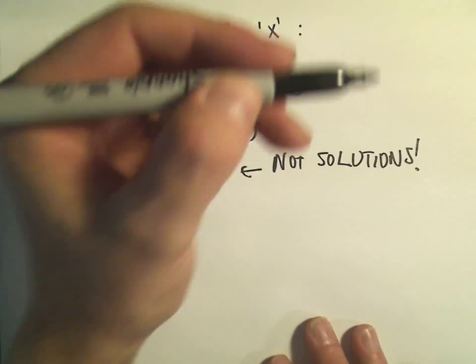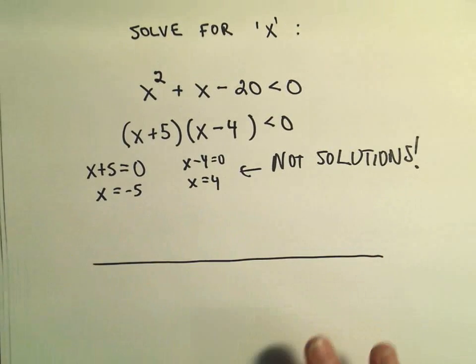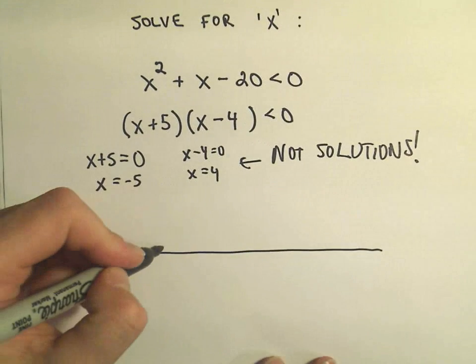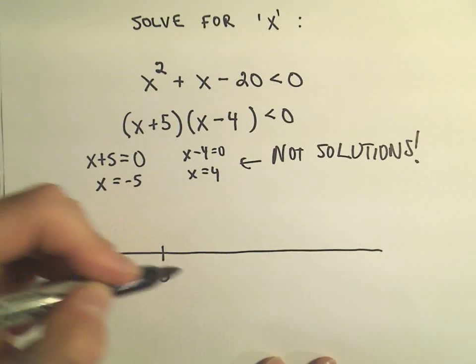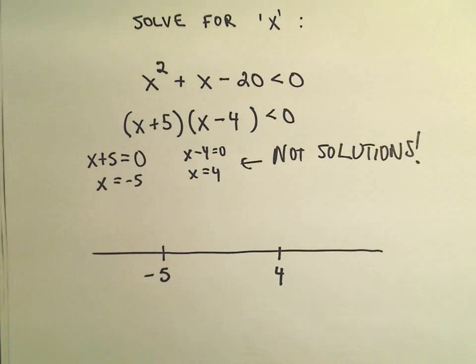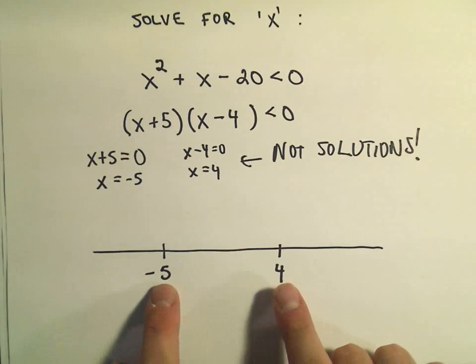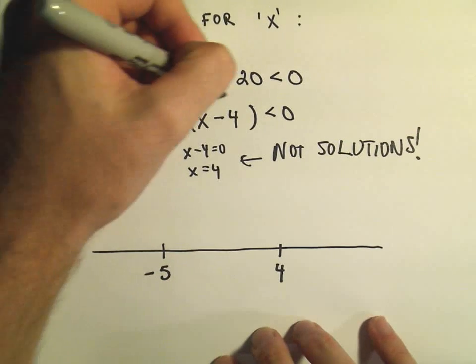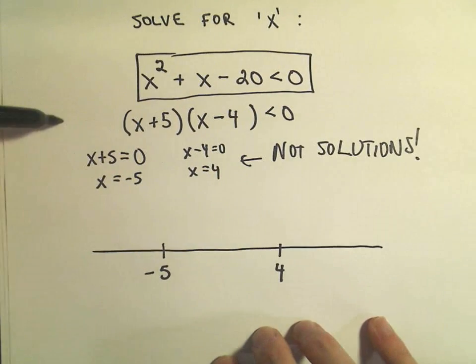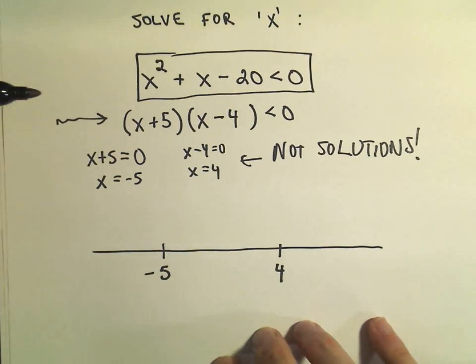What I do with these numbers, though, these are the numbers that I put on a little number line. So I'm going to put negative 5 down there, and I'm going to put positive 4 down there. What you have to do for quadratic inequalities is, we're going to have to check these numbers back in the original inequality, or equivalently, we can look at it in its factored form.